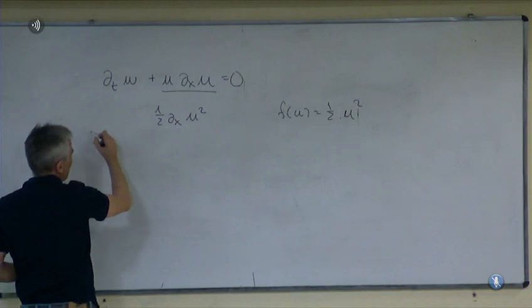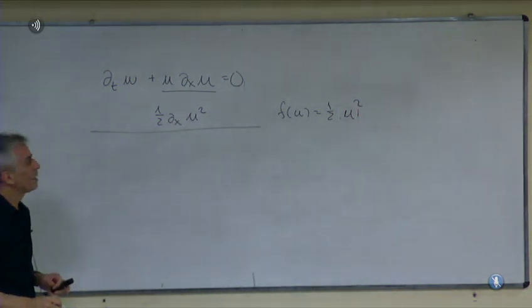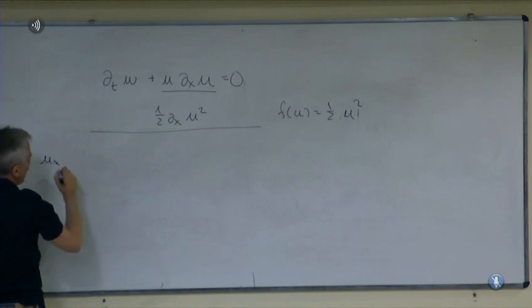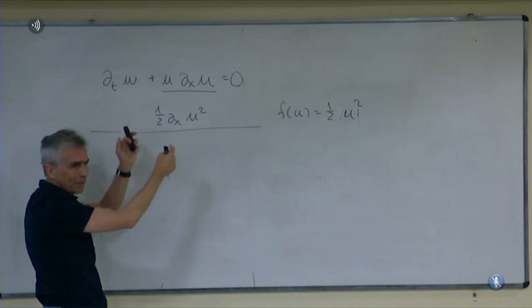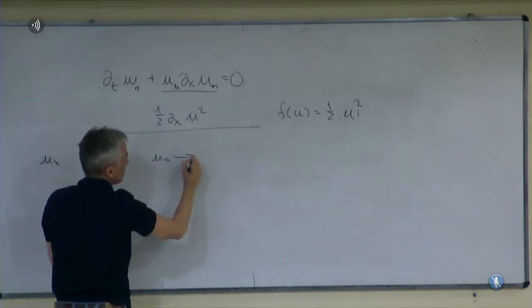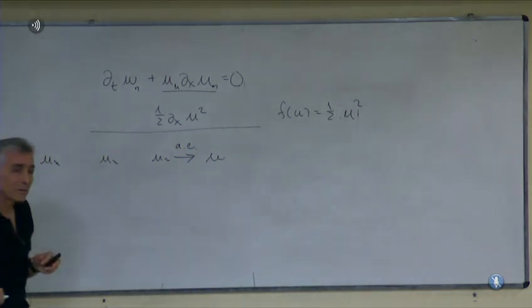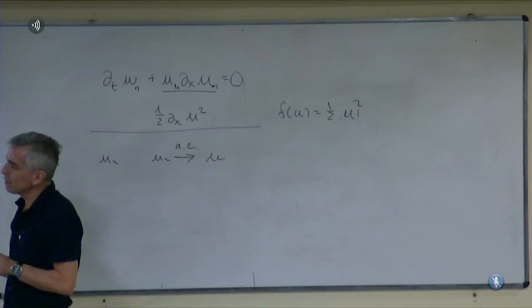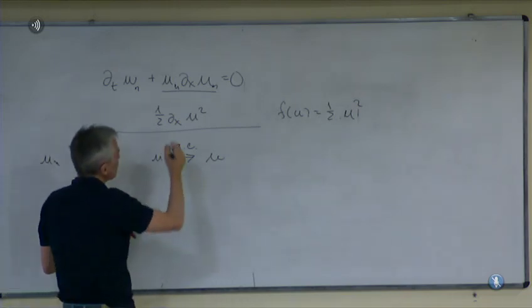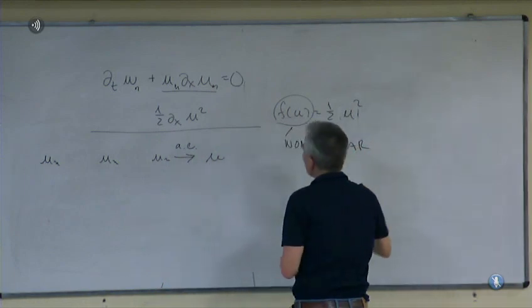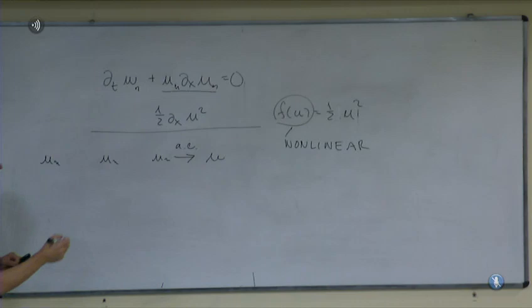For this problem, the question is: if I know I have solutions u_n of this problem, can I say the fact that they satisfy this equation means u_n converges strongly, or that the gradient of u is bounded? Well, strangely enough, we cannot say the gradient is bounded. But we still have compactness — compactness here is imposed by the fact that this function is nonlinear. What is the physics? This is a simple example of what is called a transport equation.